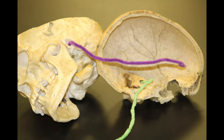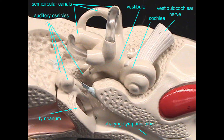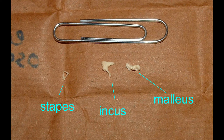In between these two is where the middle and inner ear are located — this is actually within the temporal bone. There is a cavity within the temporal bone which holds the middle and inner ear.